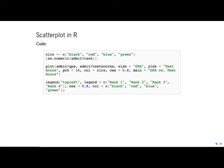Regarding the data type of the factor function: factors are a data type assigned different levels, and each level is like a category. You can think of it like a string — different categories — rather than a discrete integer value. Unlike strings, though, they're stored efficiently as integers, so you can perform operations on them.